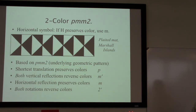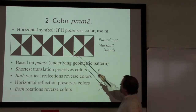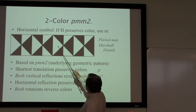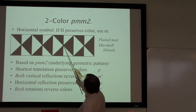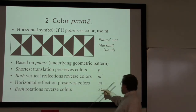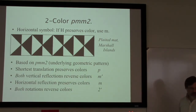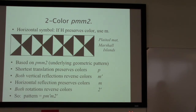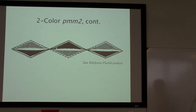We have to find both rotations. Here's one rotation — it takes this black to this white — so that rotation reverses colors. The other rotation is in the center of these big triangles and it also reverses colors — black and white get switched — so we get a two prime. The pattern is p·m'·m·2'. We go through these questions and figure out each of the symbols in a row.